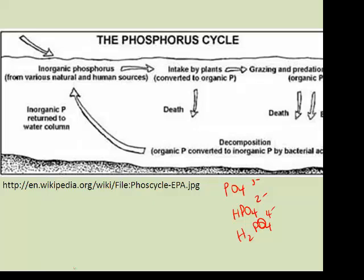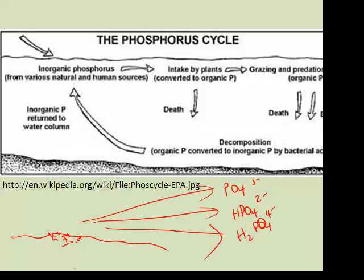Phosphorus is released by weathering, acid precipitation, or by lichens — that symbiotic relationship between a fungus and algae. All three of those things — weathering, acid rain, and lichens — work to break down rock. If they can break down rock, that's going to release some of these phosphorus-containing compounds into the environment, and that's when it gets absorbed by plants.